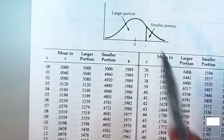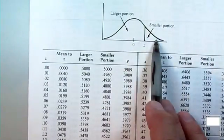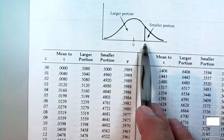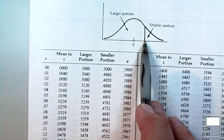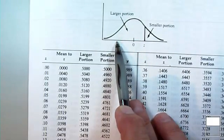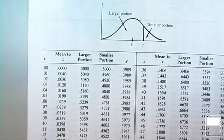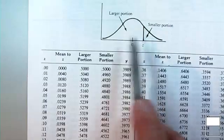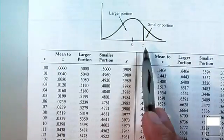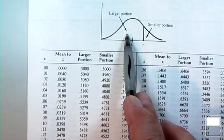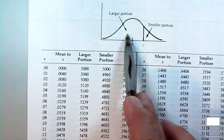When you have a z-score, how do you know which side of the normal curve you're going to be on? Is your z-score to the right or to the left of the mean — or zero? If your z-score is positive, you will be on the right. If your z-score is negative, you will be on the left. The second thing you need to know, once you've located your z-score on either side, is whether you're concerned with the larger portion or the smaller portion in order to figure out your probabilities.